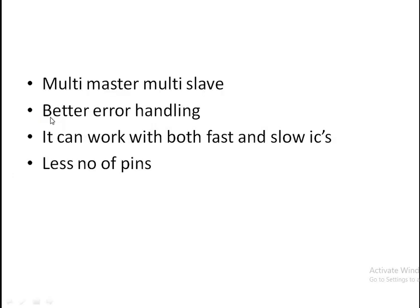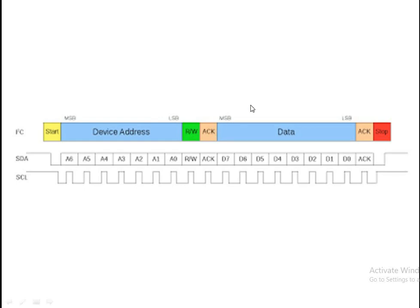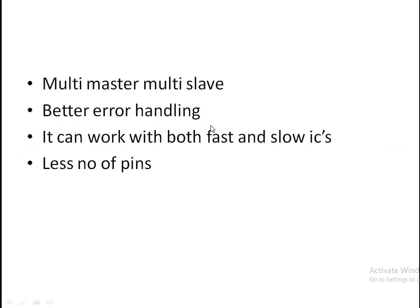The second one is better error handling. As it has an acknowledgement, the error probability is very low and we can handle errors very easily. It can work with both fast and slow ICs, and the last one is less number of pins because it uses only two wires, so it reduces the number of pins.